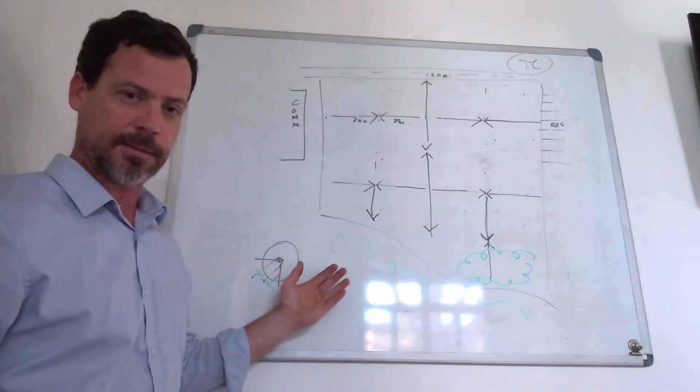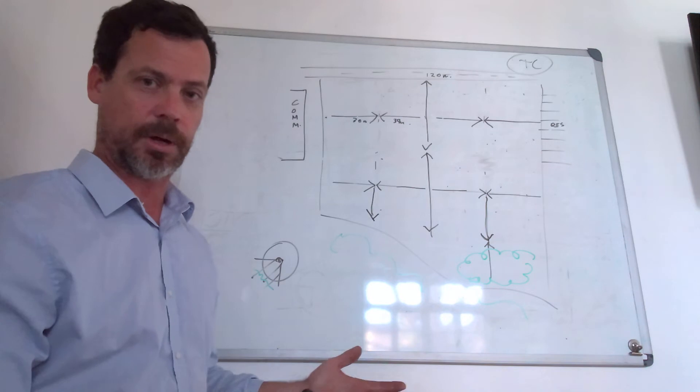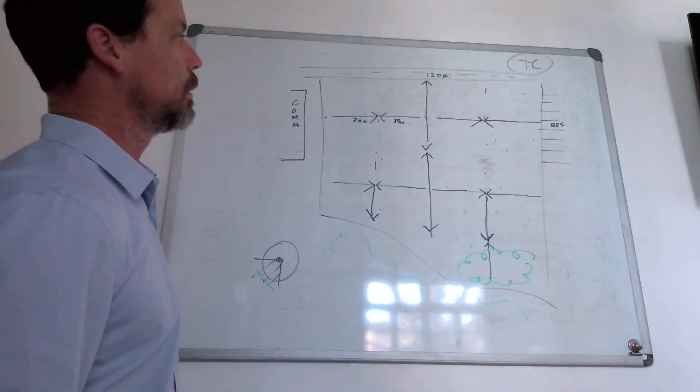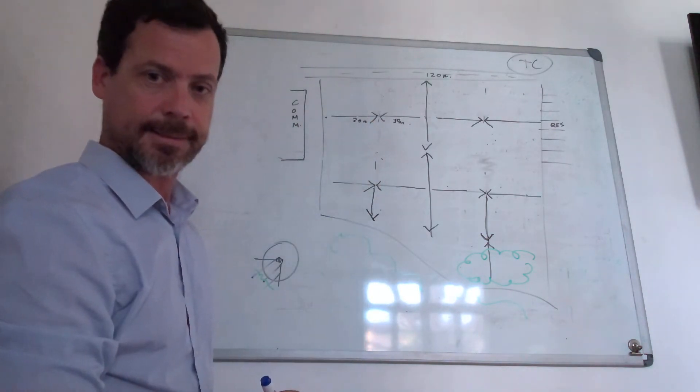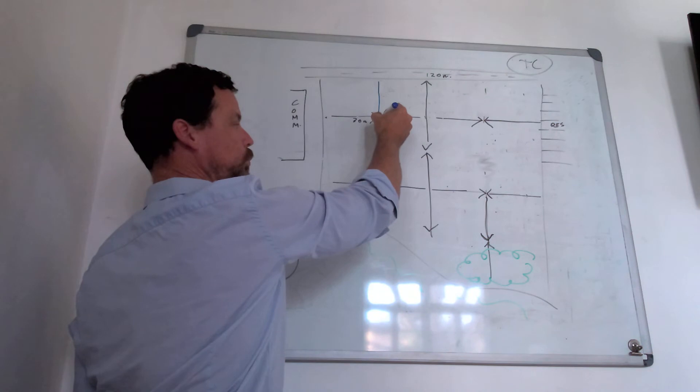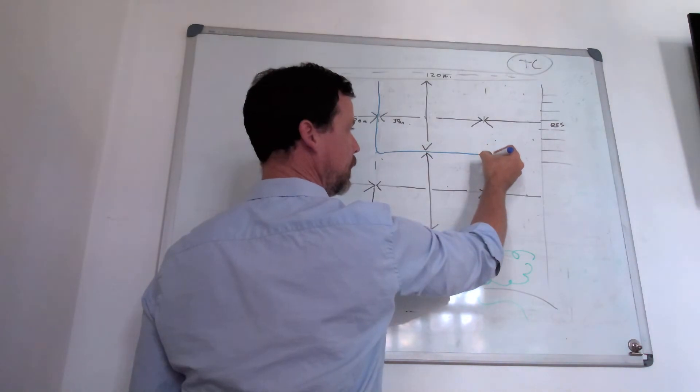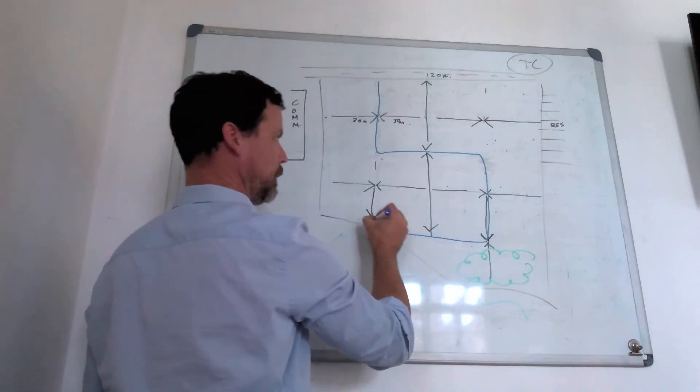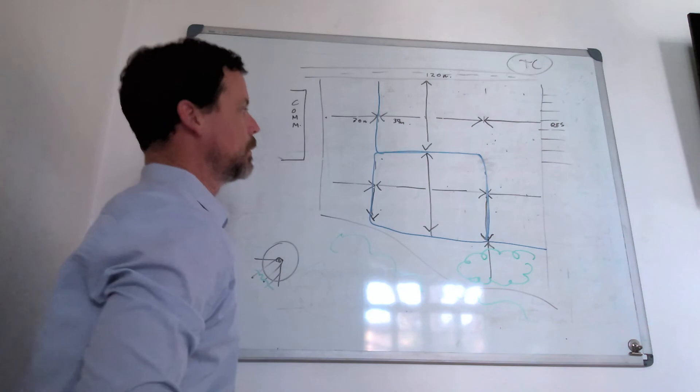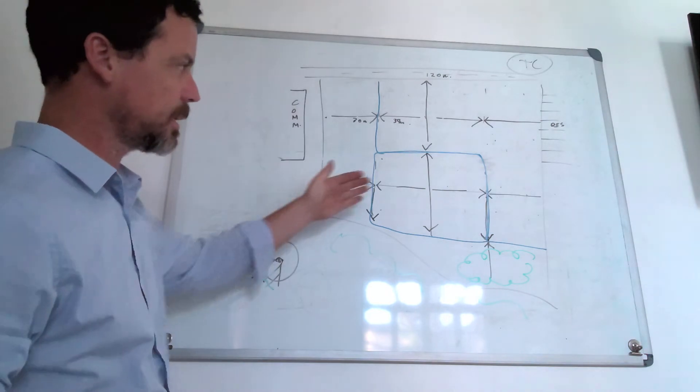Now once you've got the arrows in place, this will basically tell you where your allotments—your blocks, sorry—are going to lie. So what we see here is where the arrowheads meet, that's generally where a road is going to go. So you can now see that the blocks are starting to form.